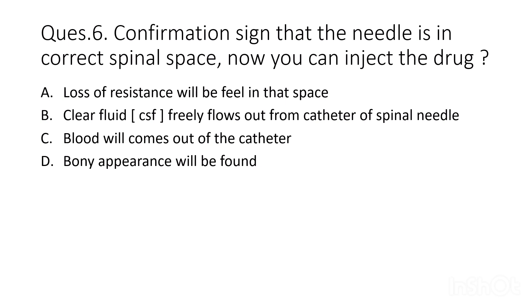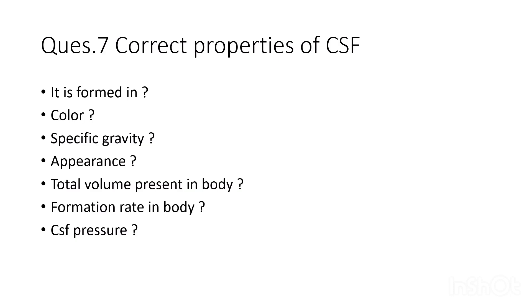Sixth question: what is the confirmation sign that the needle is in the correct spinal space? Options are: loss of resistance felt, clear CSF freely flows out of the spinal needle catheter, blood comes out of the catheter, or bony appearance is found. The correct answer is that clear CSF freely flows out. Since spinal drug is injected in the subarachnoid space where CSF is present, CSF flow confirms correct needle placement.